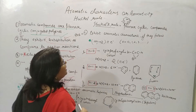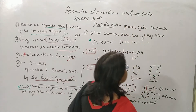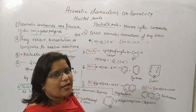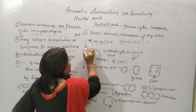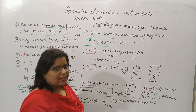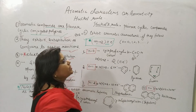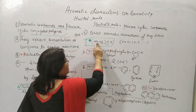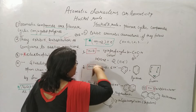Now we come to Hückel's rule. The scientist Hückel gave this rule: compounds showing aromatic character have the formula 4n + 2 pi electrons. If a compound has pi electrons satisfying this formula, it definitely shows aromatic character, where n is an integer like 0, 1, 2, 3, and so on.